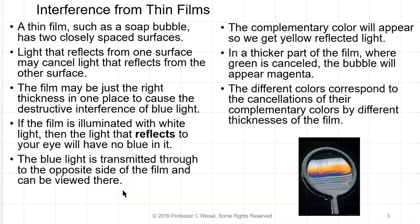A thin film, such as the soap bubble, has two closely spaced surfaces. Light that reflects from one surface may cancel the light that reflects from the other surface. If the film is just the right thickness, it could cause the destructive interference of blue light. If the film is illuminated with white light, then the light that reflects to your eye will have no blue in it. Instead, you will see the complementary color of yellow reflected. The blue light doesn't disappear — it gets transmitted through to the opposite side of the film. So the complementary color appears in the reflected light.